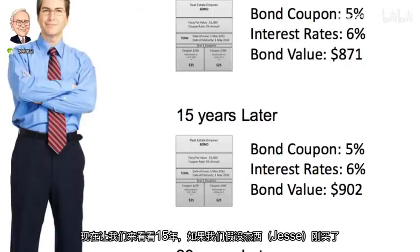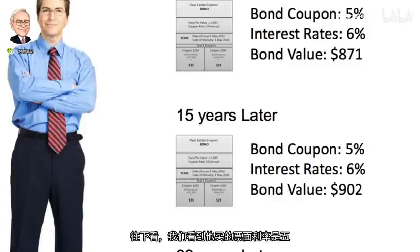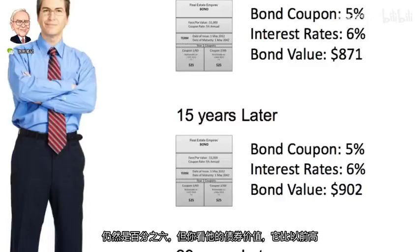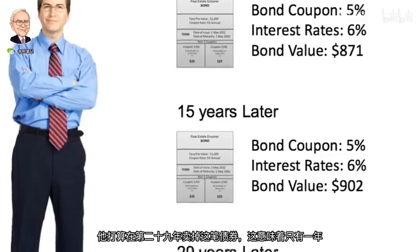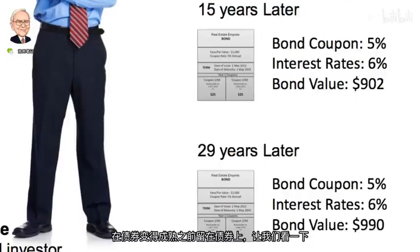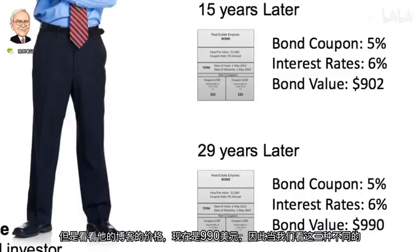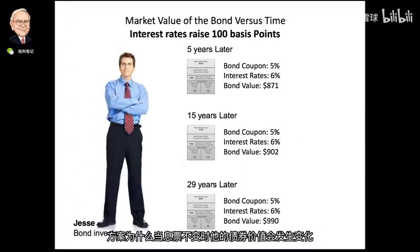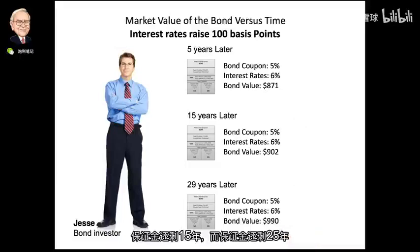Let's look at the 15-year mark. Assume Jesse held the bond for 15 years and wanted to sell it. His coupon rate of 5% is not going to change, and interest rates are still at 6%, but his bond value is higher than it was at the five-year mark. And if he was going to sell at 29 years — with only one year left before maturity — with interest rates still at 6%, his bond value is $990. So why is the bond value changing when only the term changed, not the coupon or interest rate?